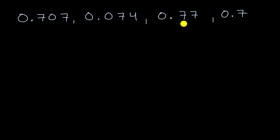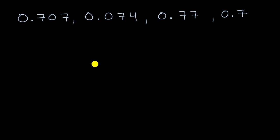We have four numbers listed here. Get out some pencil and paper and pause this video, and see if you can order these numbers from least to greatest. The least would be at the left, then keep going greater and greater until you get to the greatest number. Pause the video and have a go at that.